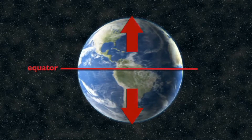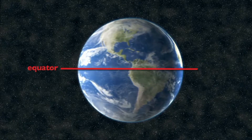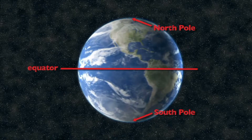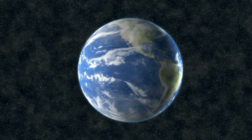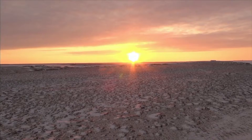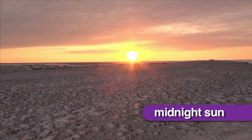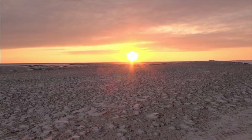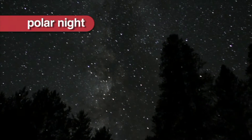Moving away from the equator in either direction, the amount of daylight becomes uneven, until you get to the poles where they can experience either 24 hours of full daylight or 24 hours of full darkness. Areas north of the Arctic Circle experience between two months of midnight sun — 24 hours of constant sunlight — during the summer, and 24 hours of darkness, known as polar night, when the sun never rises.